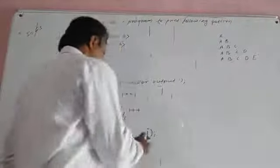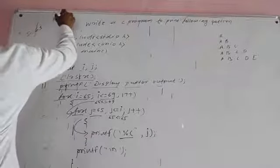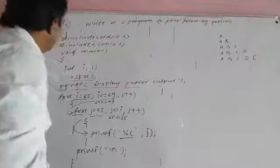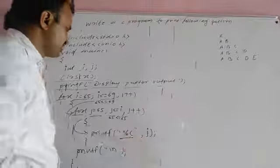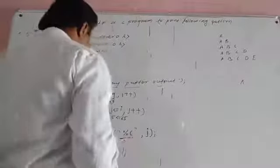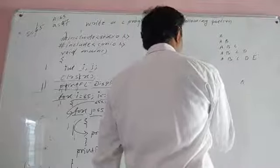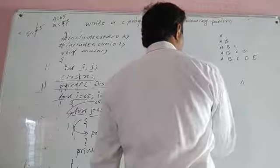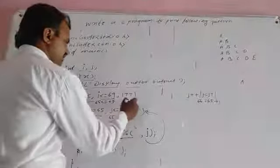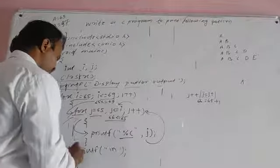For example, if j value is 65, that corresponds to the character A. The condition is checked; if condition is false, the cursor goes to the printf statement. Then the condition can be false and control moves to the next statement.